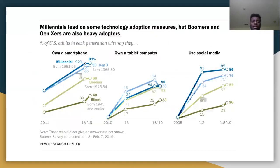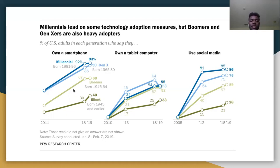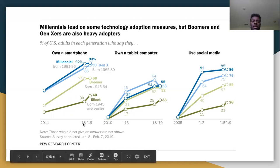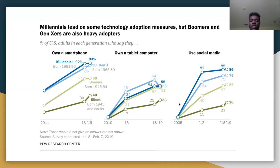This graph shows the difference between the percentage of Gen Z people that own a smartphone, a tablet, or use social media, compared to older generations. As you can see, there's a large contrast. The only generation close to Gen Z is Gen X — those are people born in 1965 to 1980, usually the parents. Then you have the Boomers, from the 1940s to 1960s, the grandparents, and those born 1945 and earlier. It's a little closer when you look at the tablets.